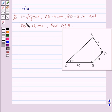Hi and welcome to the session. Let us discuss the following question which says in figure, AD is equal to 4 centimeters, BD is equal to 3 centimeters, and CB is equal to 12 centimeters. Find cot theta.